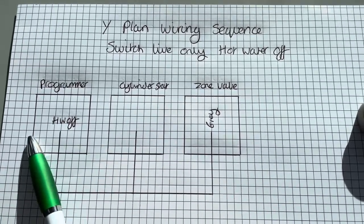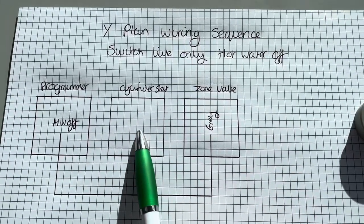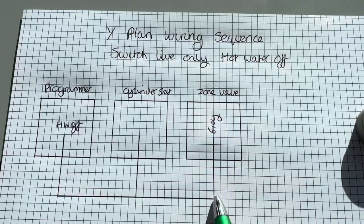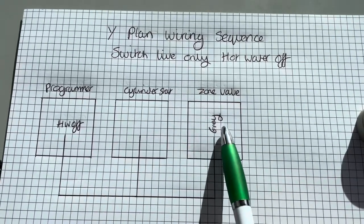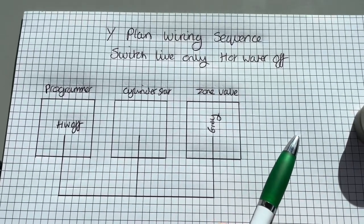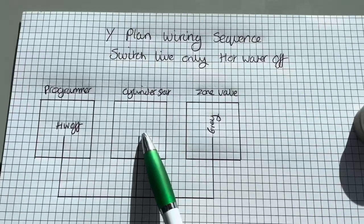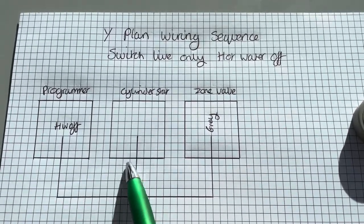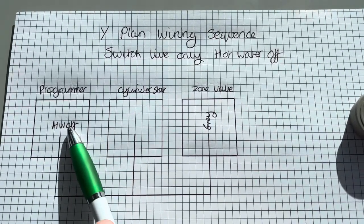When you turn hot water off on the programmer, that then sends power to your cylinder stat on number two. And then it also sends it to the grey on your zone valve. So the grey is to keep the hot water port shut. But the reason you're getting 240 at the cylinder stat, which is what used to confuse me, is because it's almost being backfed. This is all one cable. So when you have hot water on,